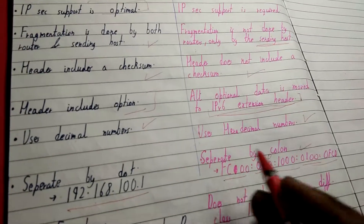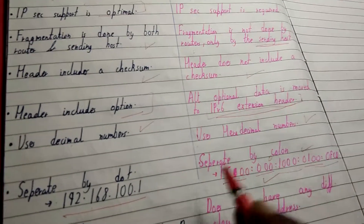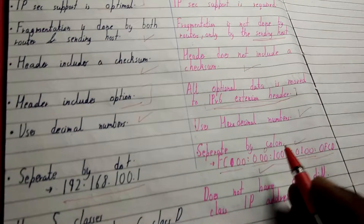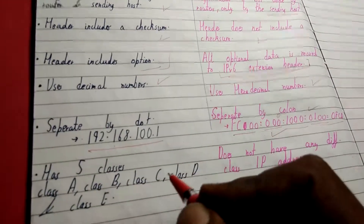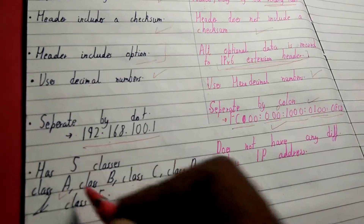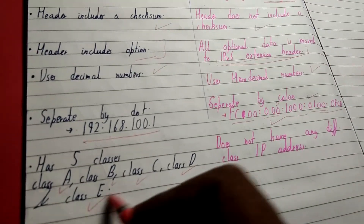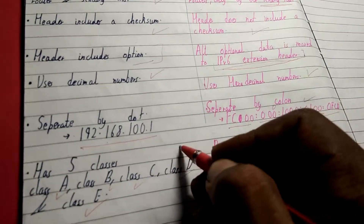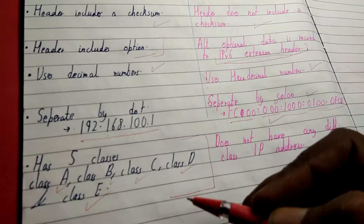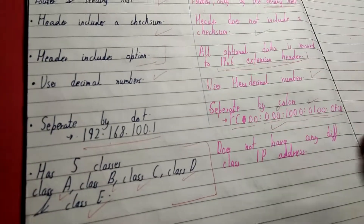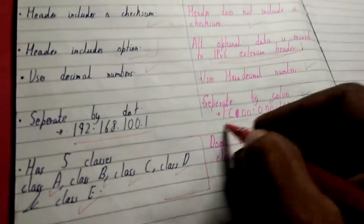IPv4 has five classes: Class A, Class B, Class C, Class D, and Class E. If you want to know more about these you can watch my video on the different classes of IP addresses. In IPv6, however, there is no such concept of classes.